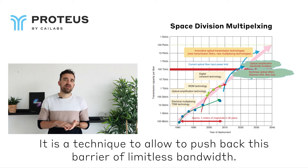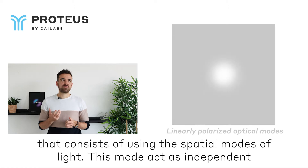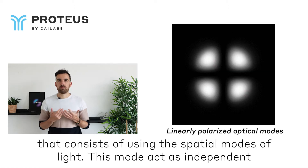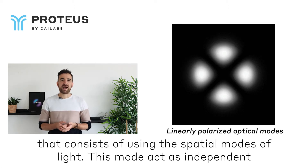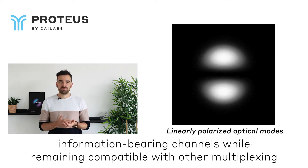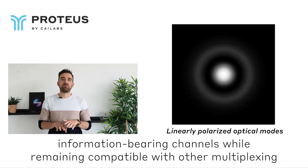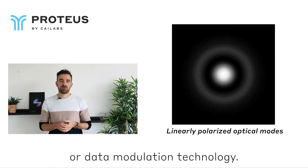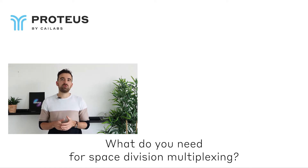Space division multiplexing is a technique used to push back this barrier of limitless bandwidth. It consists of using the spatial modes of light. These modes act as independent information-bearing channels while remaining compatible with other multiplexing or data modulation technologies.